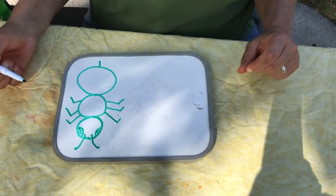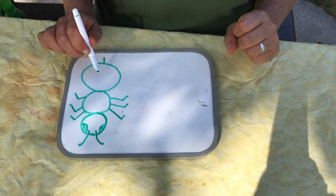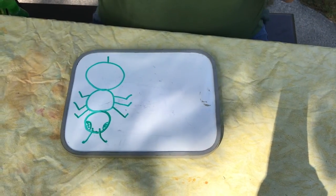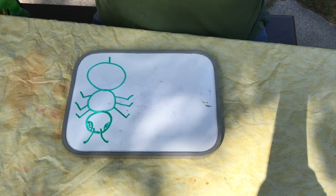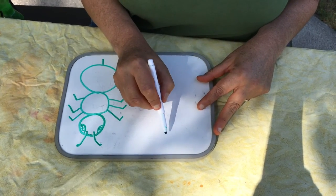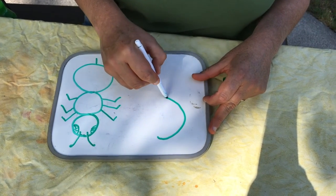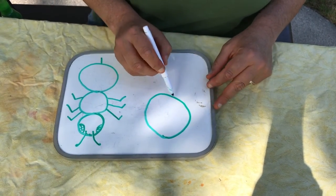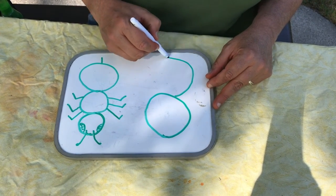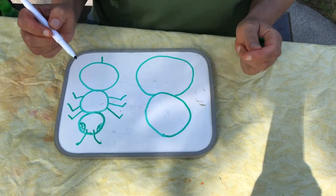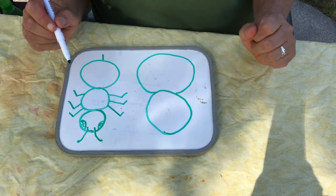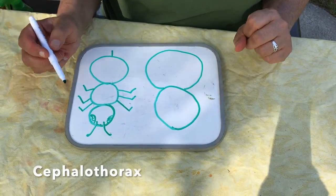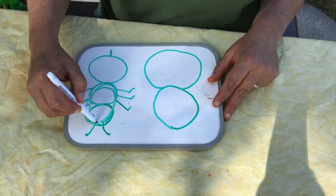So: head, thorax, and abdomen. Where do you feel hungry? Same place as an insect — right there in their abdomen. Spiders are like an insect in that they have a crunchy shell of an exoskeleton, so that's very similar. Here's the head and thorax — it's kind of like these two together made a spider. This is called a cephalothorax.